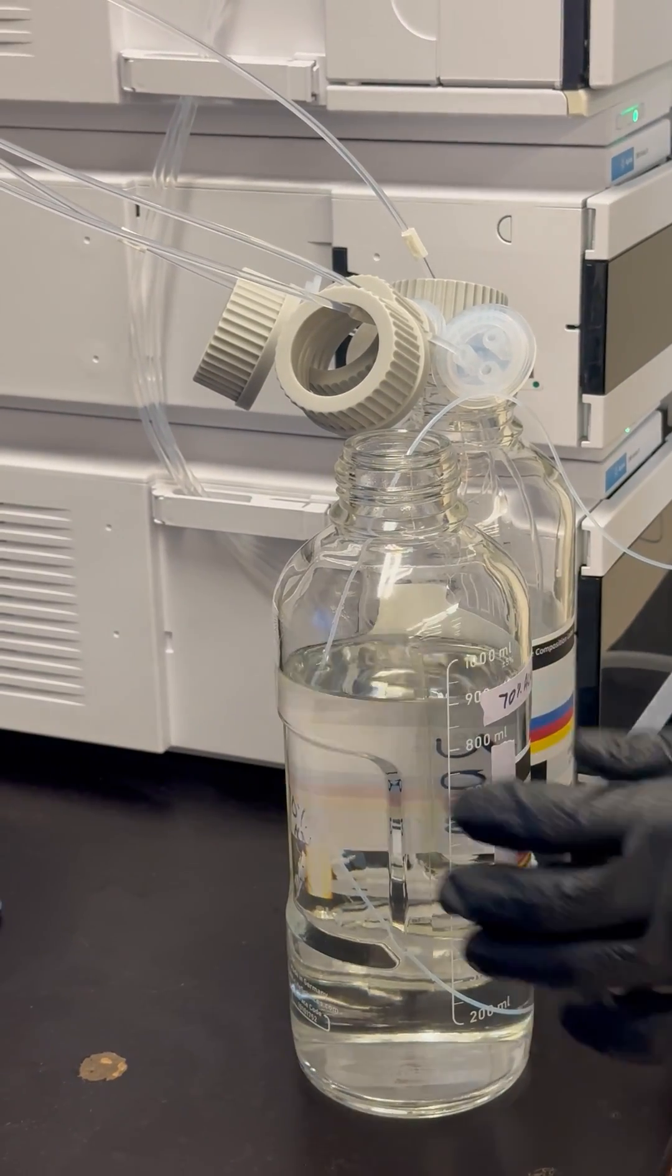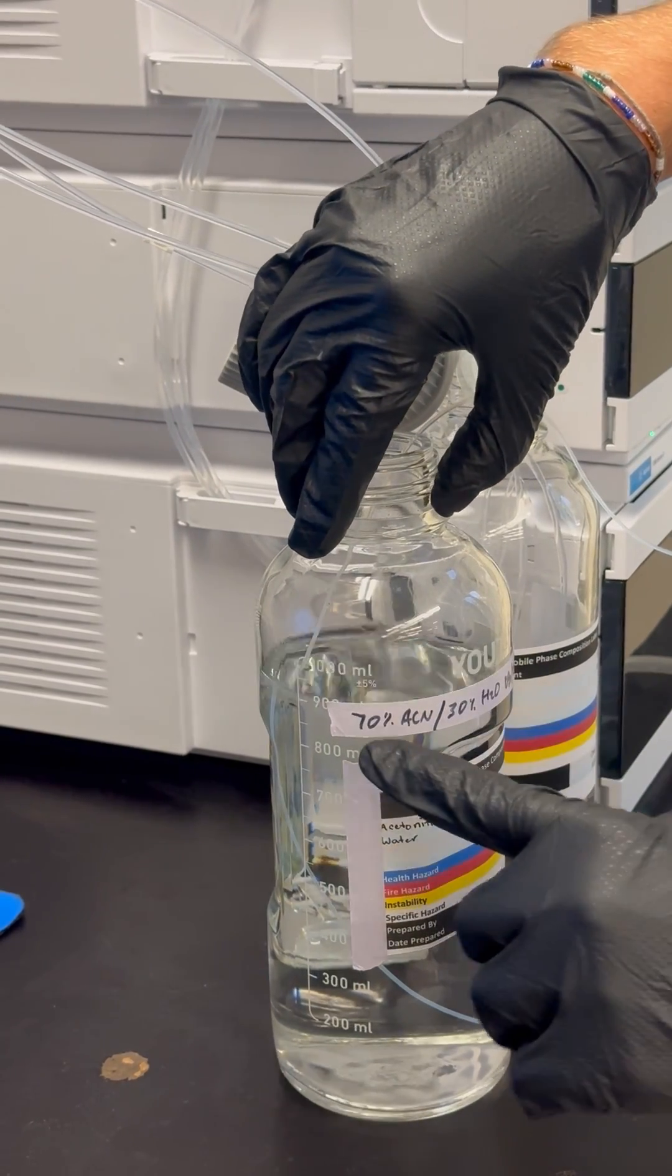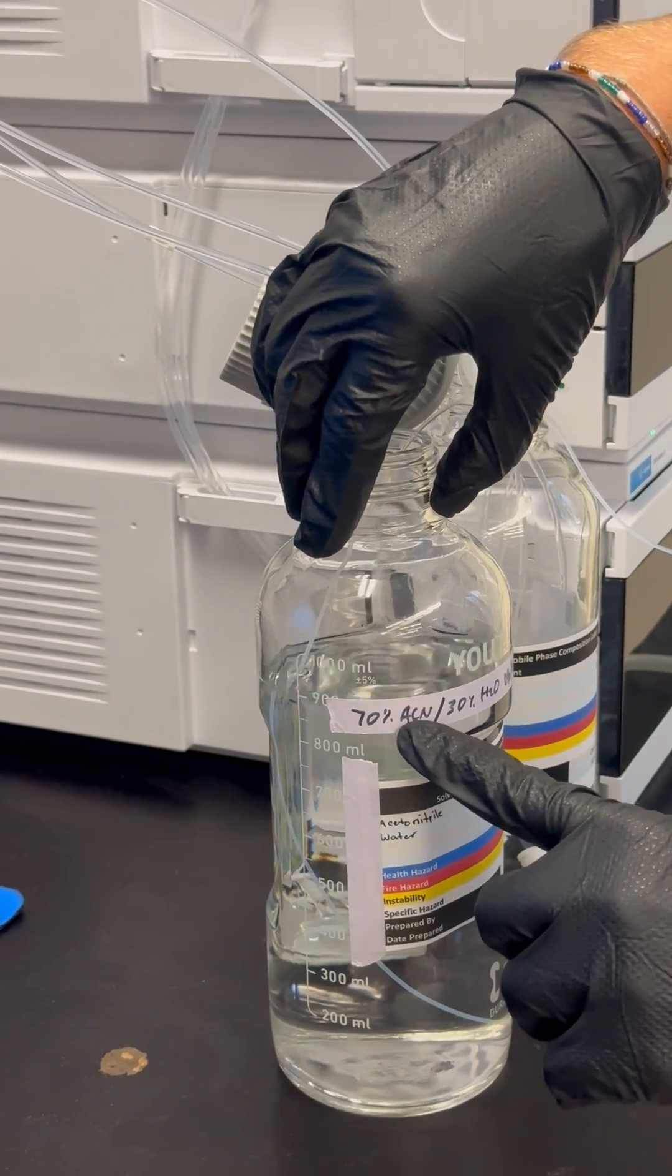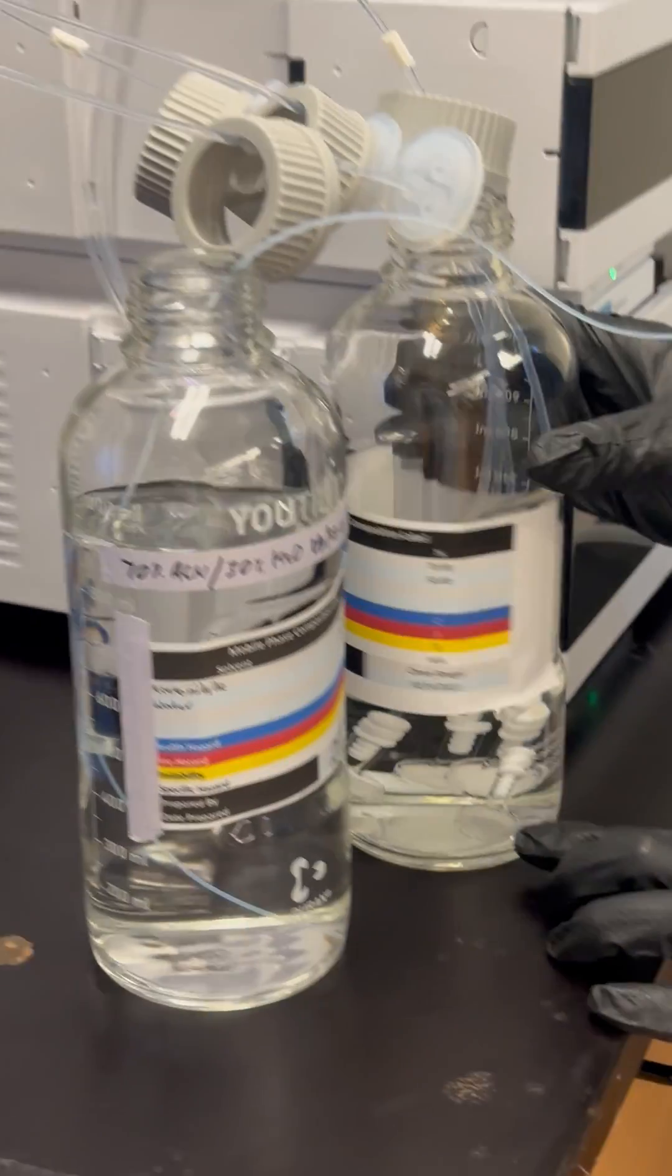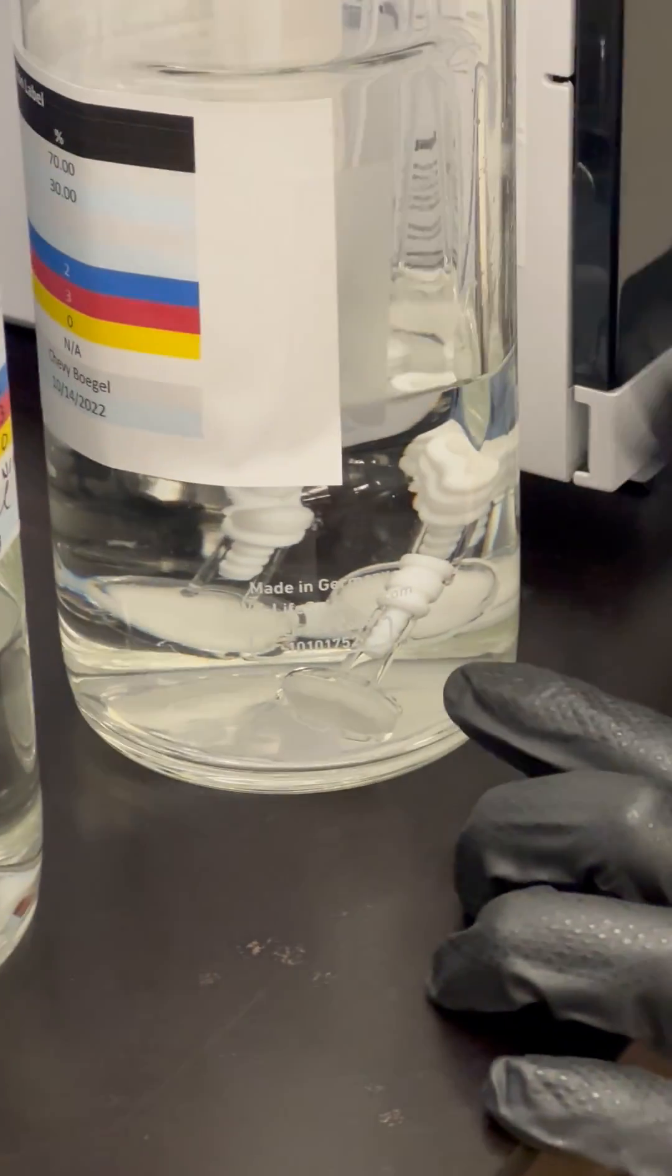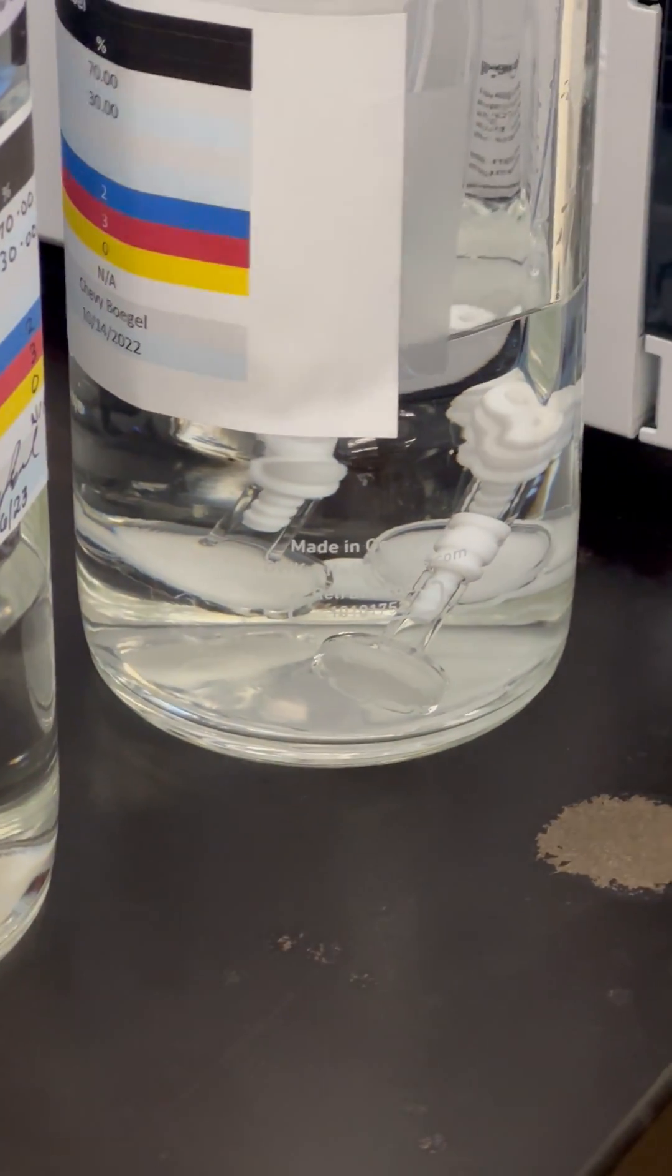So we're going to prepare a beaker of 100% organic because we have organic and water. Whatever our organic is, we're going to use that to rinse our inlet filters. These are fiberglass filters, and we're going to wash those fiberglass filters with our pure acetonitrile before we introduce it to our new mobile phase bottle.